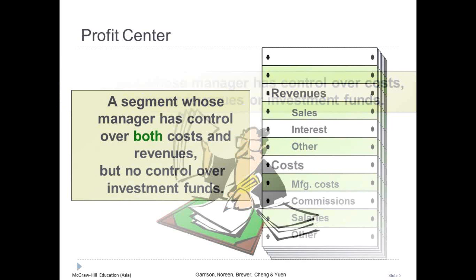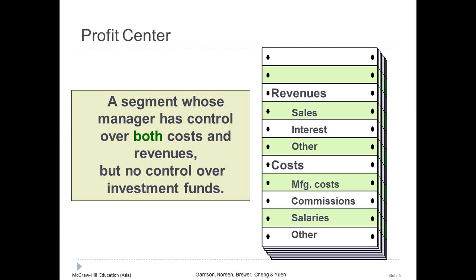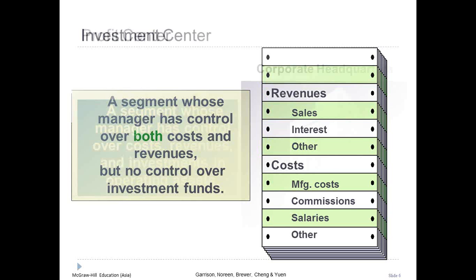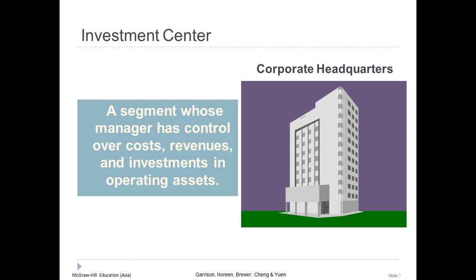The manager of a profit center has control over both costs and revenue. Profit center managers are often evaluated by comparing actual profit to targeted or budgeted profit — an example of a profit center is a company's cafeteria. The manager of an investment center has control over cost, revenue, investments, and operating assets. Investment center managers are often evaluated using return on investment (ROI) or residual income. An example of an investment center would be the corporate headquarters.